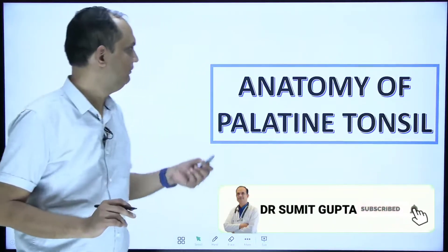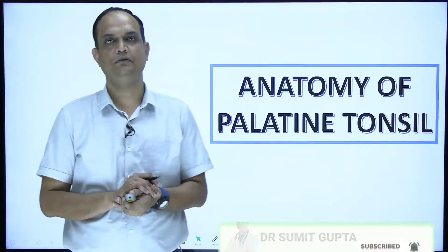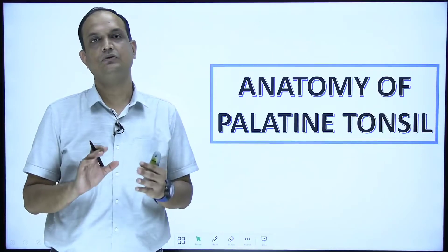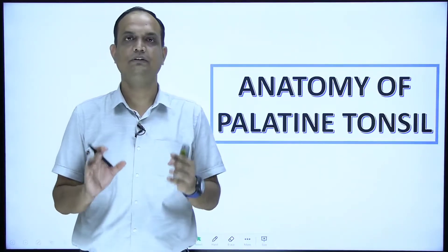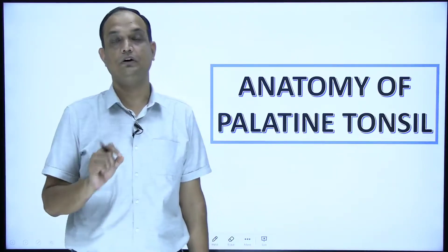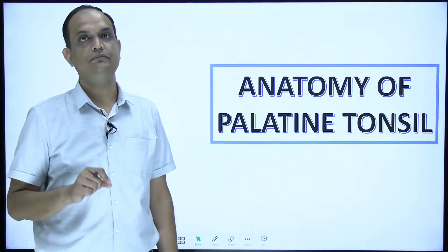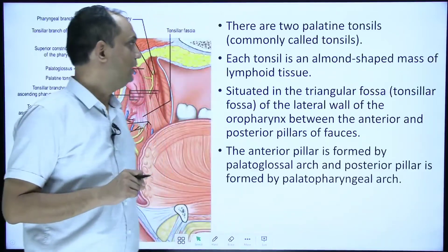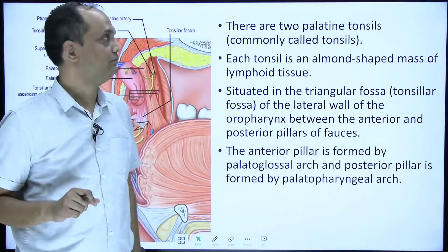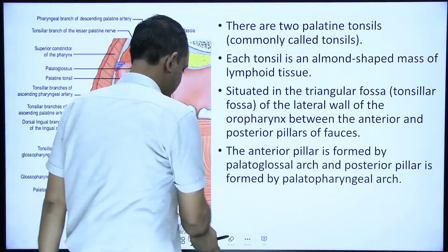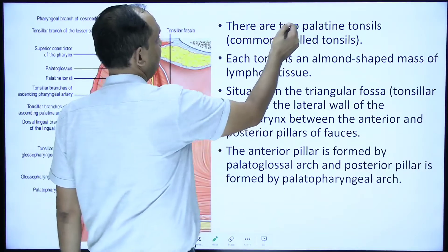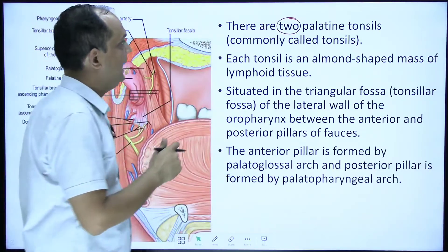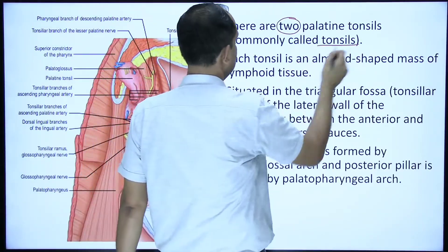Hello students, today we will discuss the anatomy of the palatine tonsil. Palatine tonsils are also known simply as 'tonsil' — whenever we use the word tonsil, we are referring to the palatine tonsil. These are paired structures present in the oropharynx and are commonly known as the tonsil.